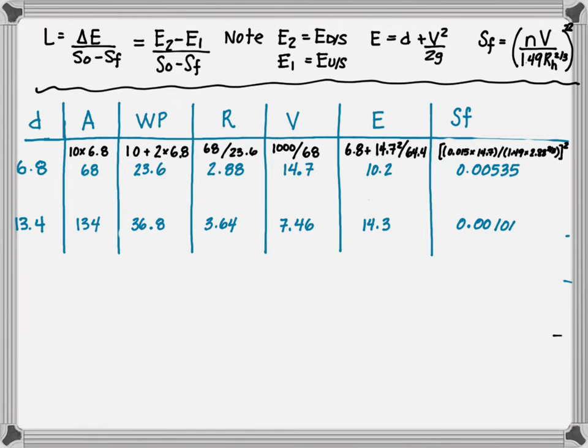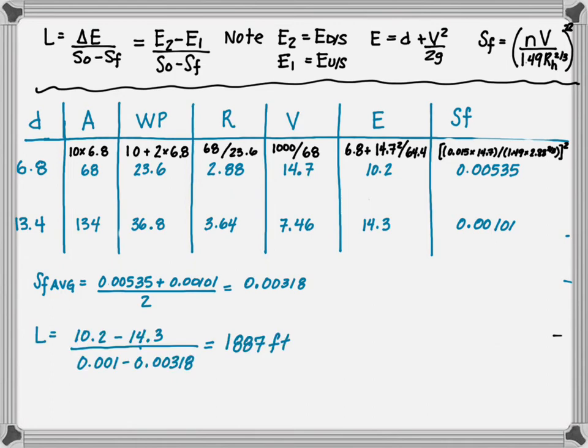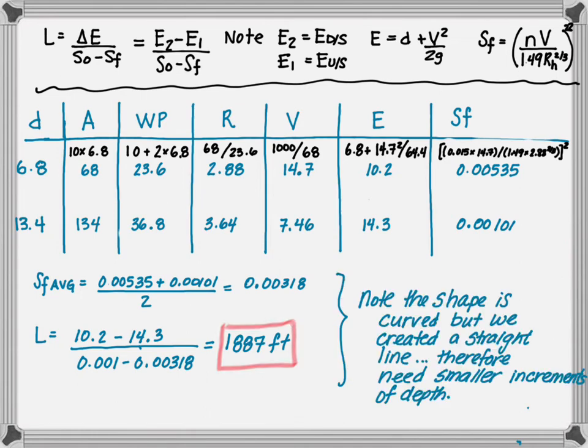Now that we have that, we are ready to then determine what the average friction slope is. We take 0.00535 and add it to 0.00101 divided by 2 and we get 0.00318. Then we can calculate the length as the change in energy divided by the bed slope minus the friction slope. So we have 10.2 minus 14.3 divided by 0.001 minus 0.00318. It gives us a total length of 1,887 feet.